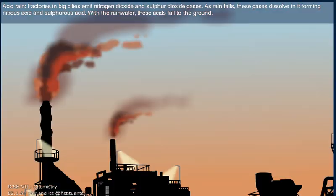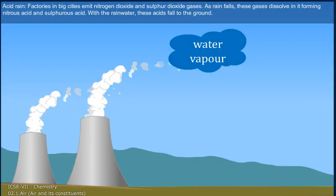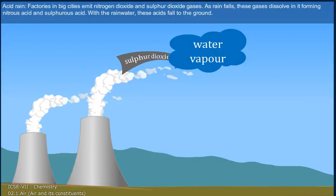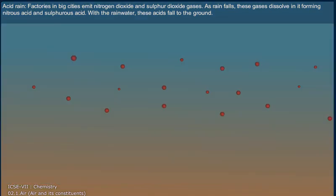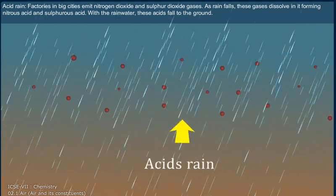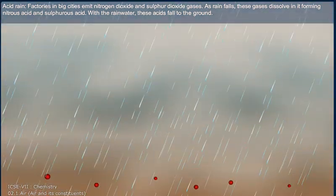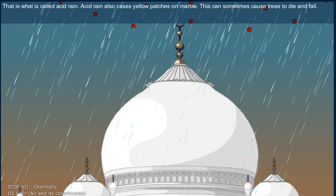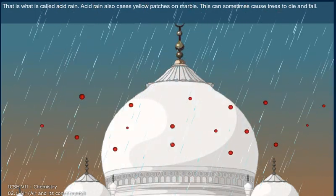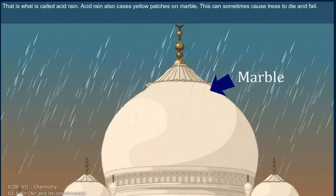Acid rain: factories in big cities emit nitrogen dioxide and sulfur dioxide gases. As rain falls, these gases dissolve in it, forming nitrous acid and sulfurous acid. With the rainwater, these acids fall to the ground — that is why it is called acid rain. Acid rain also causes yellow patches on marble and can sometimes cause trees to die and fall.